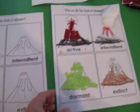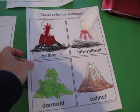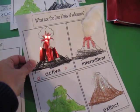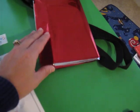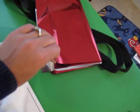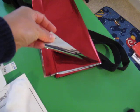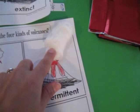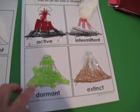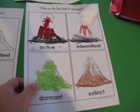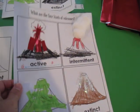After we talked about all of this, we came and did our little posters. For active, they glued some red shiny paper — just wrapping paper from the craft store, regular gift wrapping that's shiny. For intermittent, they did smoke using cotton. For dormant, they did grass using tissue paper. And for extinct, they did snow using glitter.